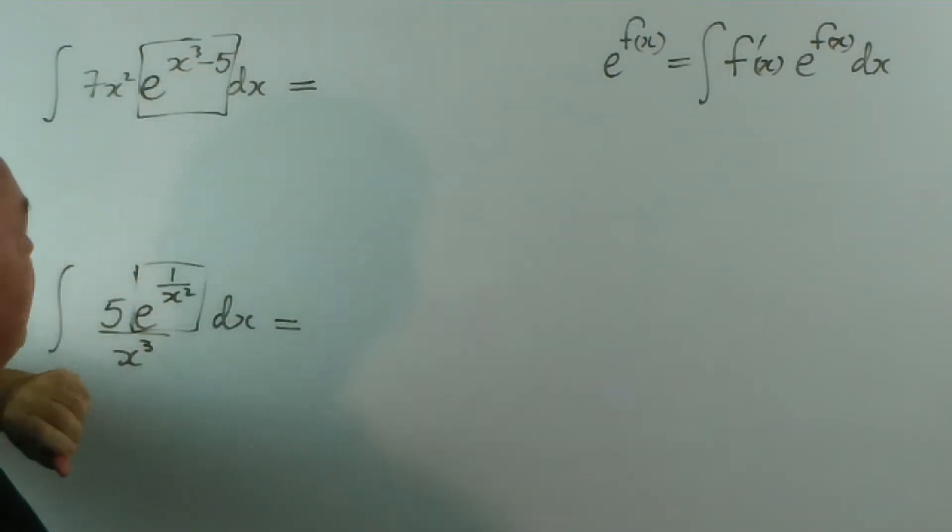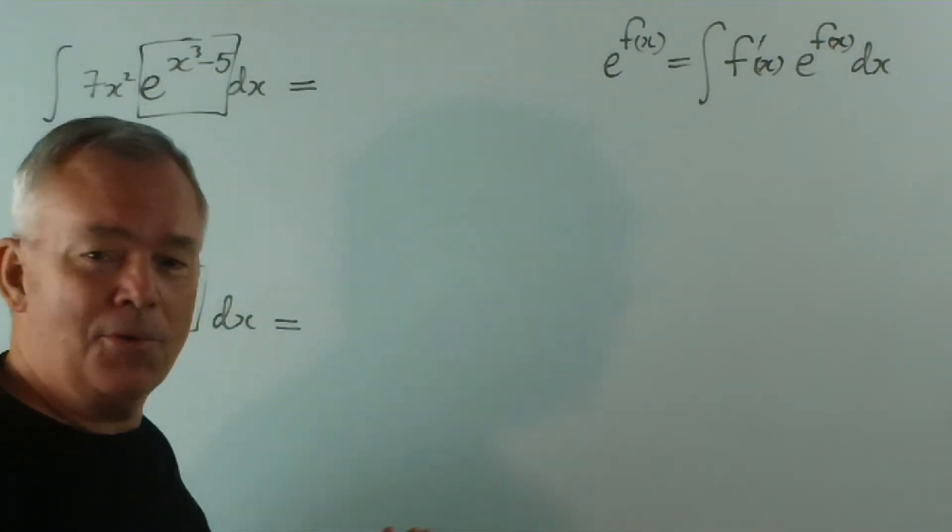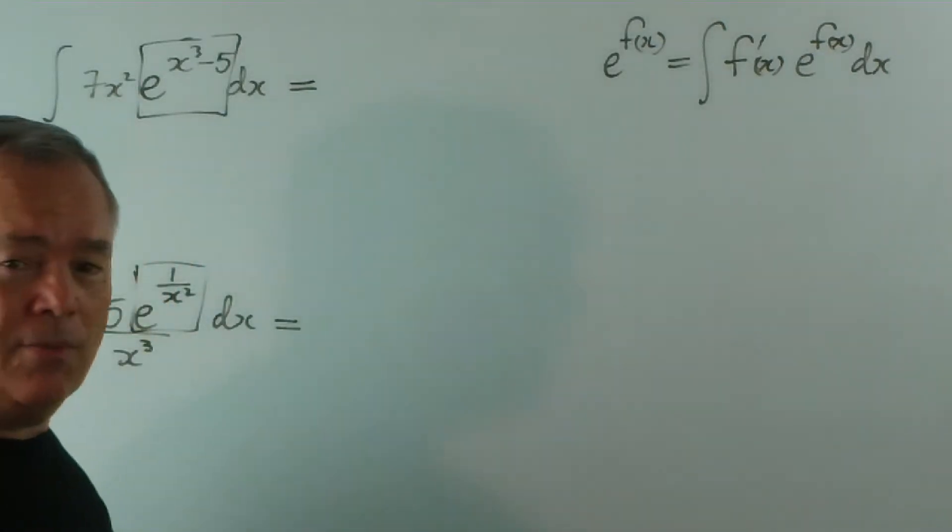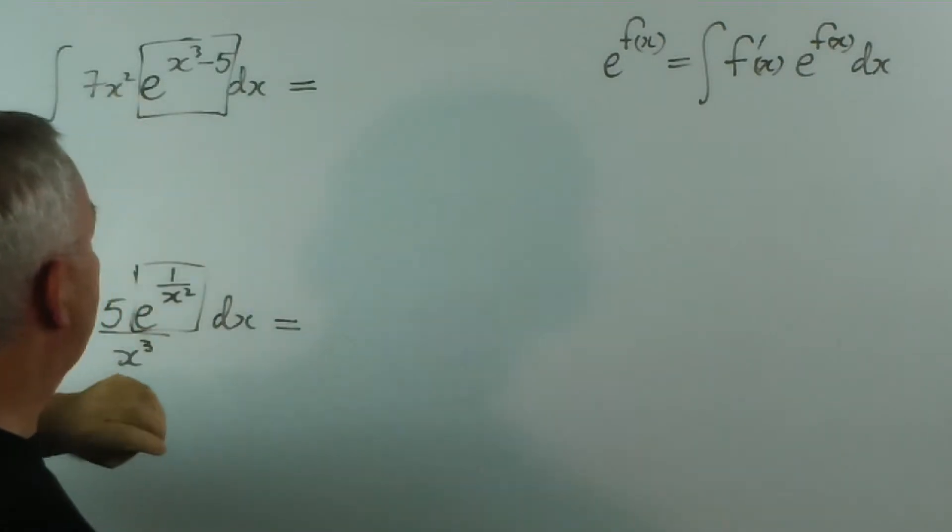What's the derivative of x cubed minus five? Well, it's three x squared. And there's our x squared function. Now we'd like a three there rather than a seven, but we'll deal with that later.